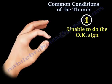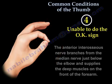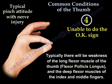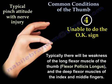Number four: unable to perform the okay sign due to anterior interosseous nerve injury. The anterior interosseous nerve comes from the median nerve just below the elbow and supplies the deep muscles on the front of the forearm. This is a typical pinch attitude with nerve injury. Typically, there will be weakness of the long flexor muscle of the thumb — the flexor pollicis longus — and the deep flexor muscles of the index and middle fingers.